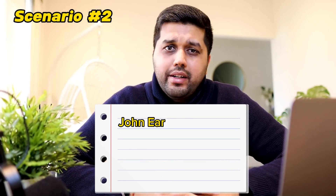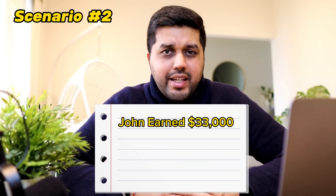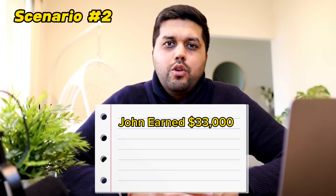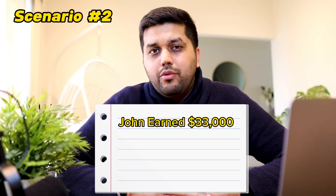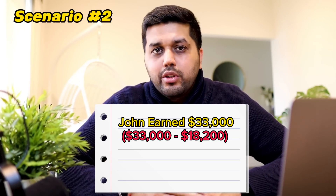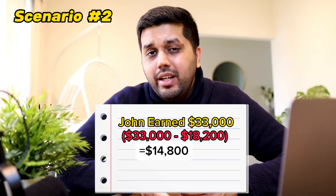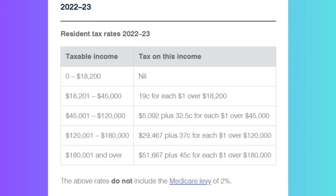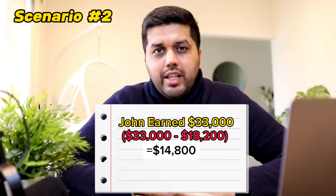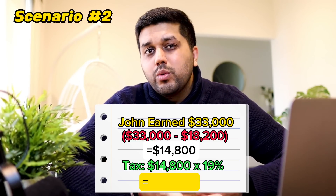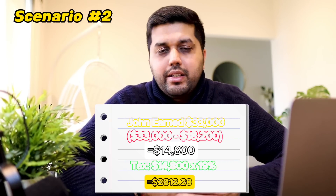In scenario number two, let's say John earned $33,000 during the year. Anything above $18,200 will be taxable, so the first $18,200 is tax-free. From $33,000, we deduct $18,200, which leaves us with $14,800. We then calculate taxes on this number. As per the tax table, anything above $18,200 is taxed at 19 cents or 19%. So in this case, $14,800 multiplied by 19% leaves us with $2,812. That will be his estimated tax.